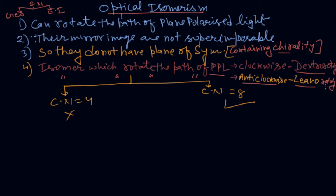Now one thing easy for you. Optical isomerism is not shown by coordination number 4. It can be represented by coordination number 6. So it means tetrahedral complexes are not showing this. Only octahedral complexes are showing this isomerism.